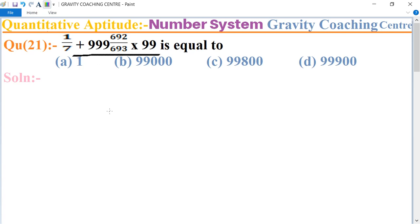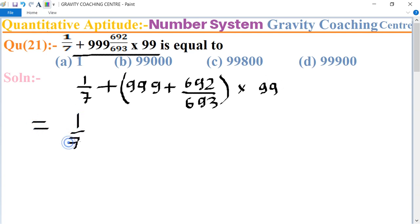First we write 1 by 7 plus we can write this one as triple 9 plus 692 upon 693, bracket into 99, equal to 1 upon 7 plus.